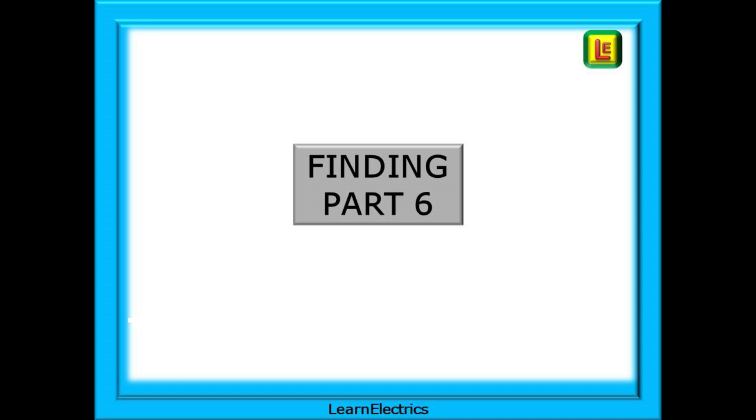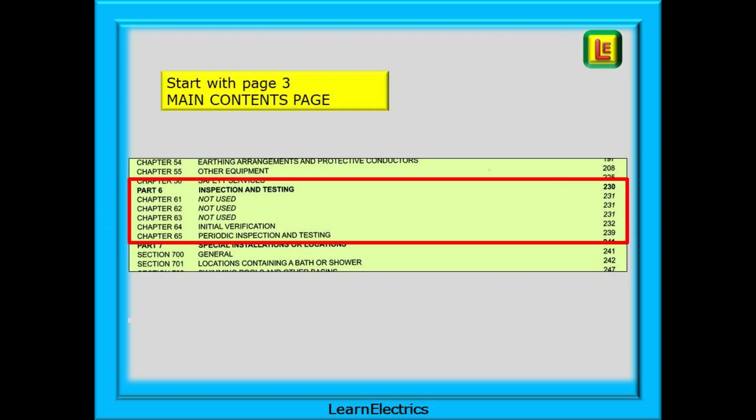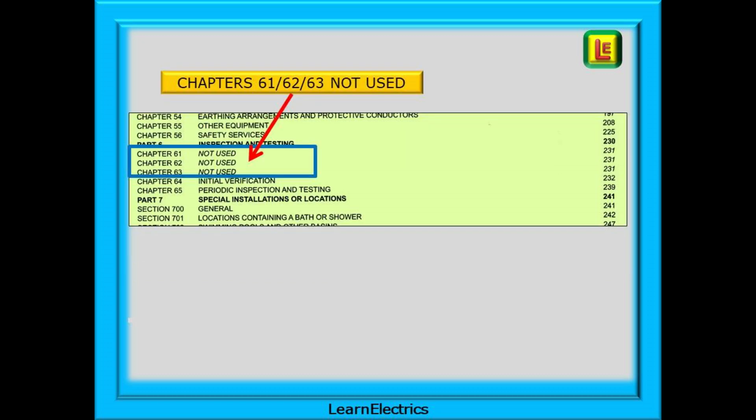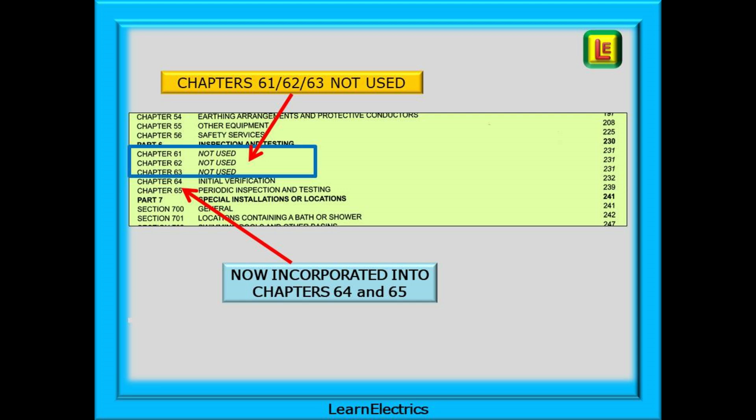Let's begin by finding Part 6 in the regs book. Make page 3 your starting point. This is the main contents page for the whole book and learning how to use this page will get you to the right answers easily and quickly. Part 6 is about half way down the page. You will notice that chapters 61, 62 and 63 are marked as not used. The information that they contained is now incorporated into chapters 64 and 65.